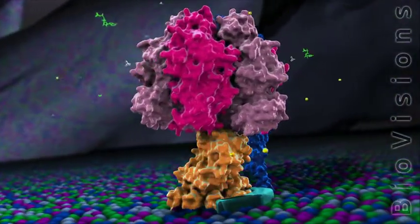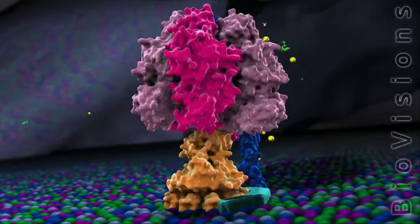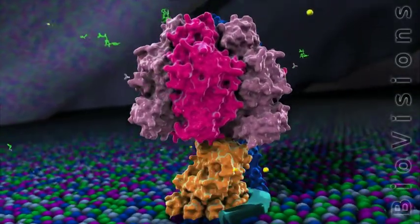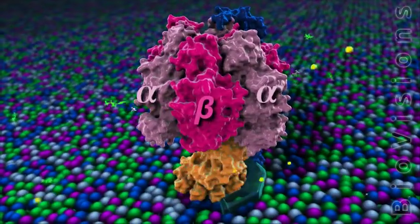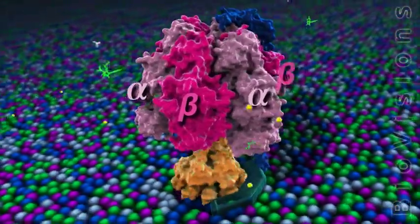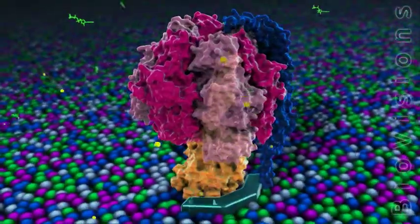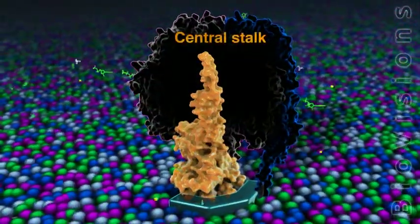We focus first on the F1 domain, where ATP is synthesized. There are three alpha subunits shown in light pink, and three beta subunits shown in dark pink. The alpha and beta subunits are tightly packed around a rotating central stalk.